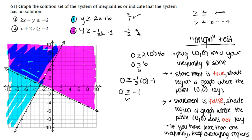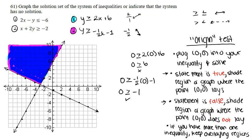Now that both inequalities are shaded, we apply the rule for systems: keep only the overlapping regions. The overlapping shaded region satisfies both inequalities — where the first inequality is shaded away from the origin and the second is shaded toward the origin. When we erase the non-overlapping shaded regions, the remaining shaded area is the final answer to the graph of the system.